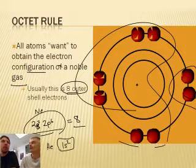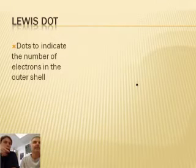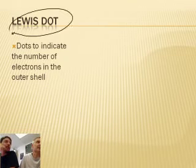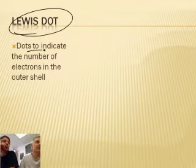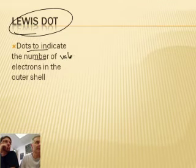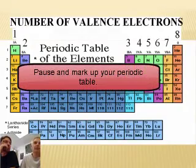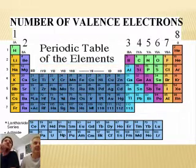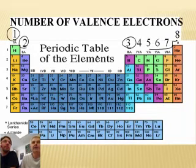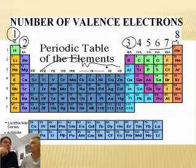That leads us to a way that we symbolize things called Lewis dot structures. The dots indicate the number of valence electrons — the outer shell electrons. I want you to take your periodic table out and write a number on top of each column: one, two, and then up to eight. The middle transition metal columns are kind of schizophrenic and we can't really do this with them — they're strange. But we can do the main group ones. Once you've done that, we're going to do some examples.